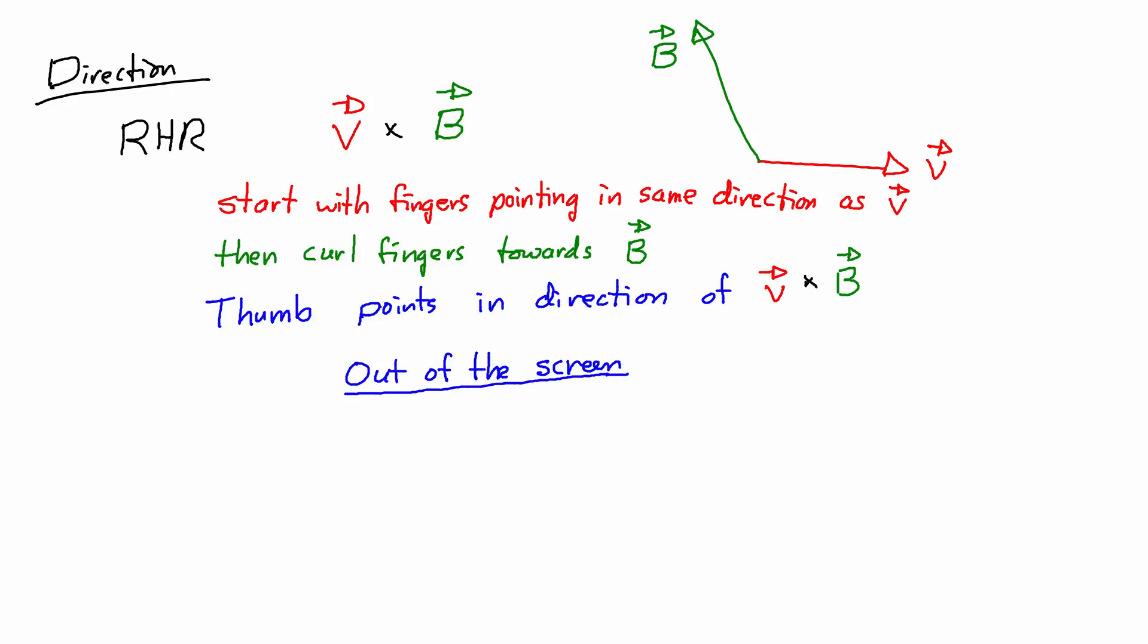Whenever we're working with three-dimensional things on two-dimensional paper or even the two-dimensional screen, often we'll show vectors coming in and out of the screen in different ways. So to show a vector coming out of the screen we'll draw a dot with a circle around it, and so that would be the direction of the magnetic force and that's also the direction my thumb is going.